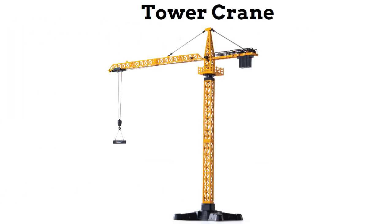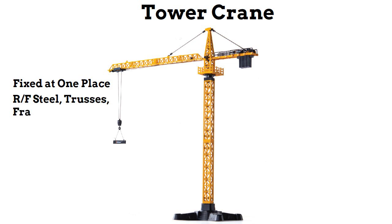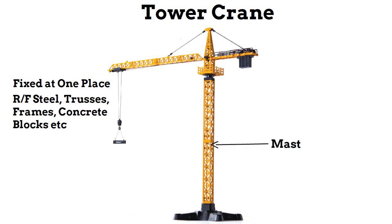Tower cranes are fixed at one place and are used for moving heavy materials like reinforcement steel, trusses, frames, concrete blocks, etc., to a required height. It consists of a mast which provides the tower crane with sufficient height.